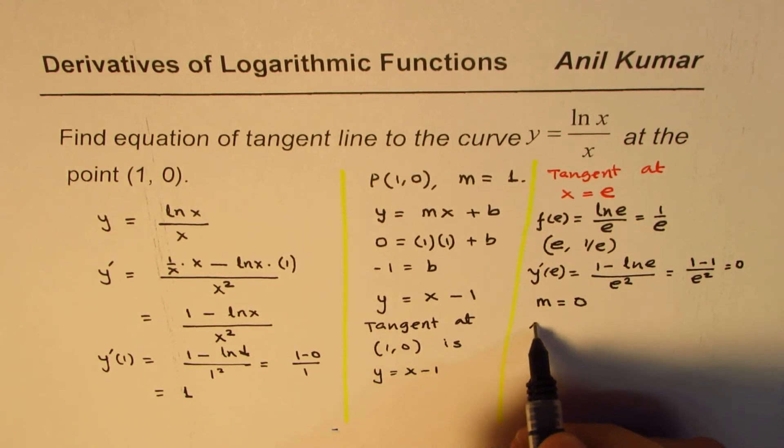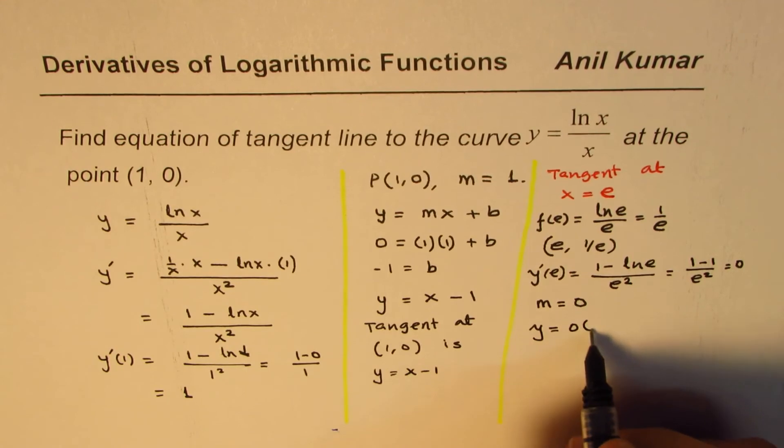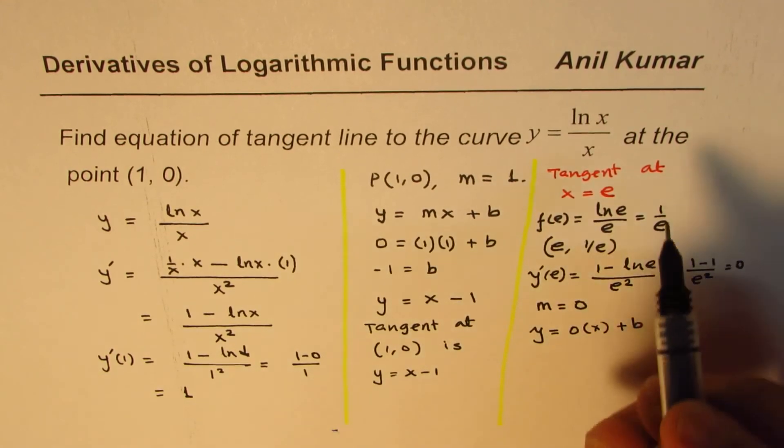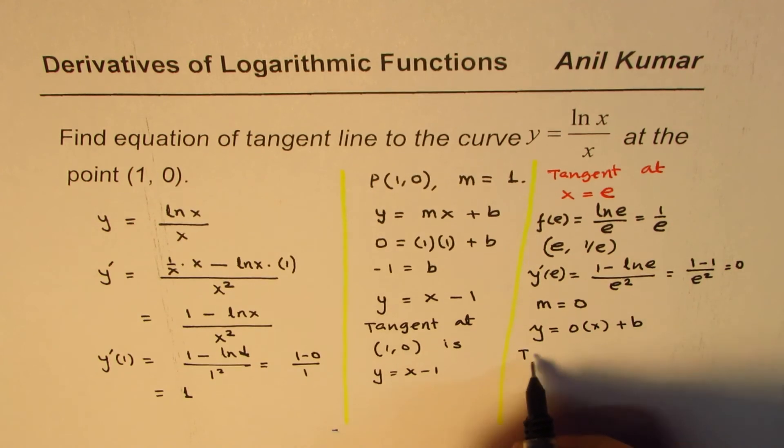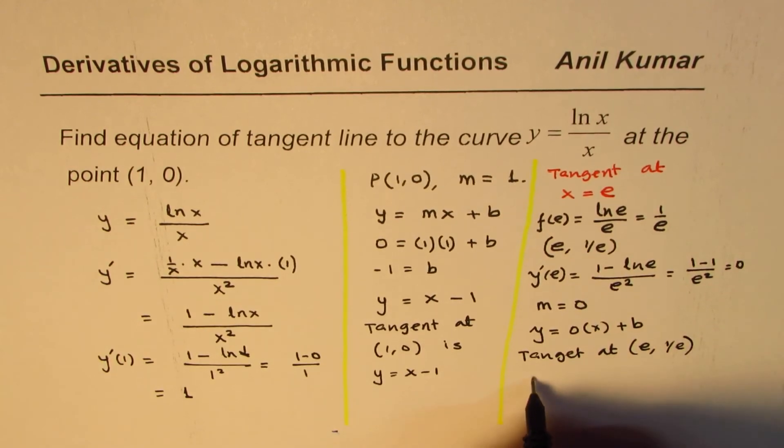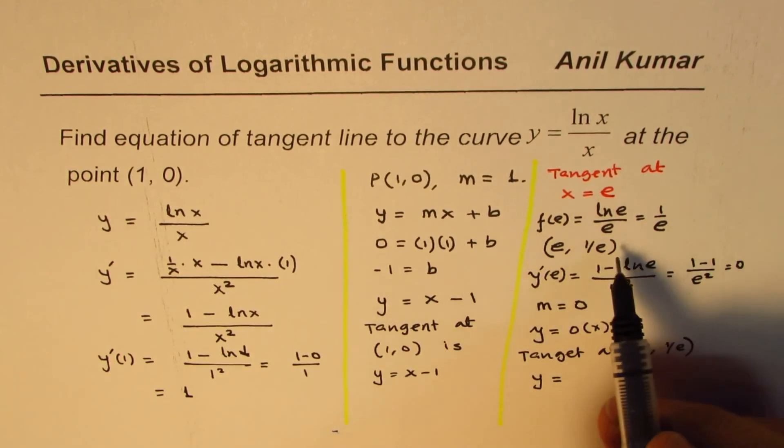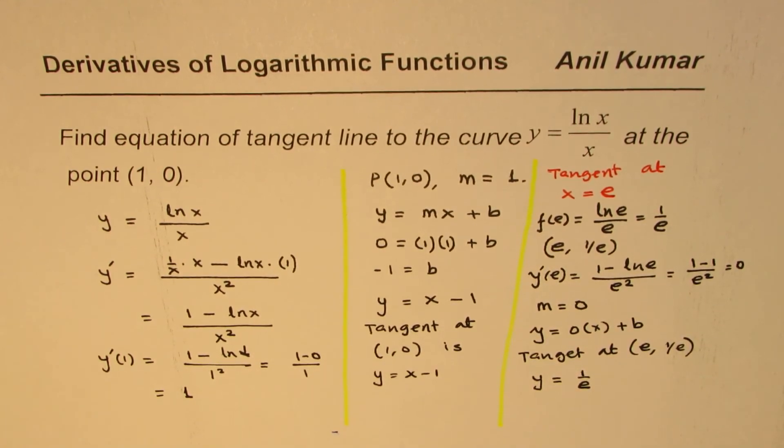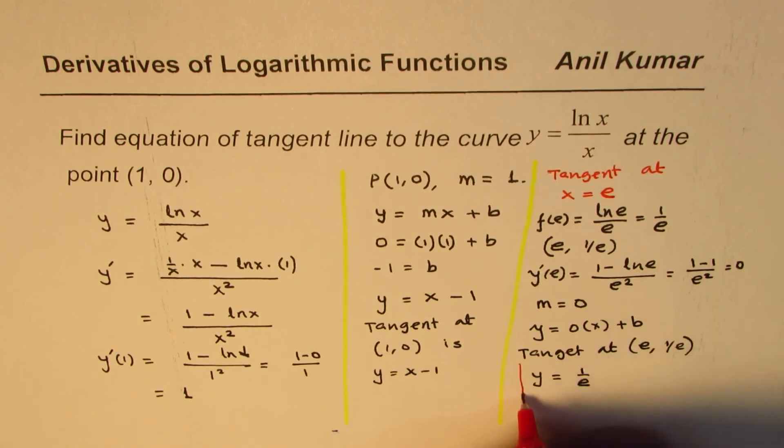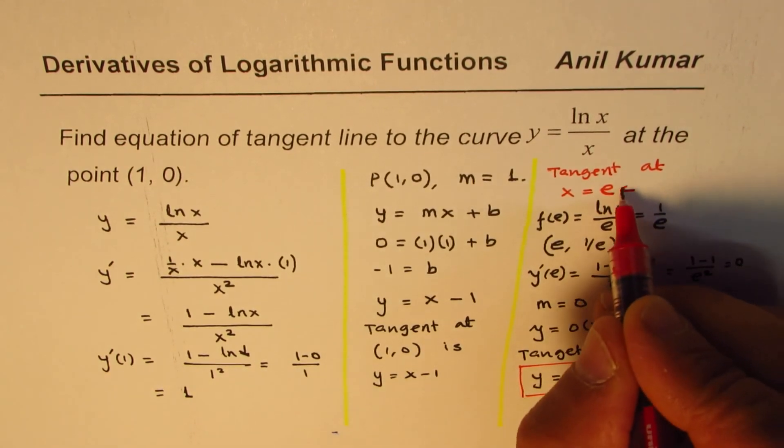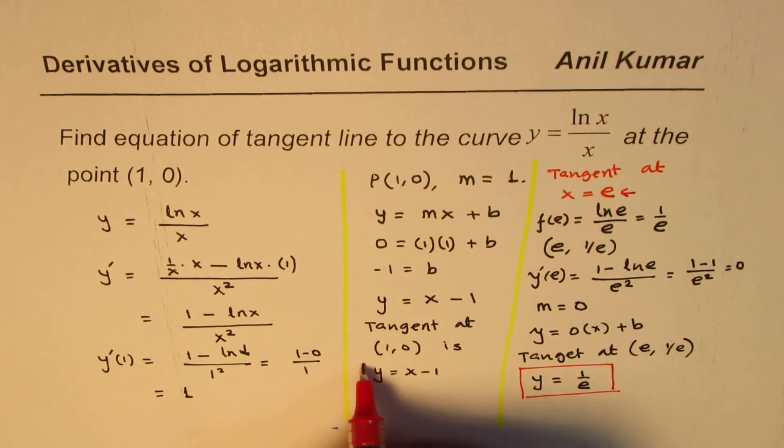So the line will be y equals to 0 times x plus b, that means the y value, right? So the tangent at the point e, 1 over e is going to be y equals to the y value, 1 over e, right? So that is a horizontal line, which will be tangent at the point where x is equals to e. So we have the answer for tangent at the point